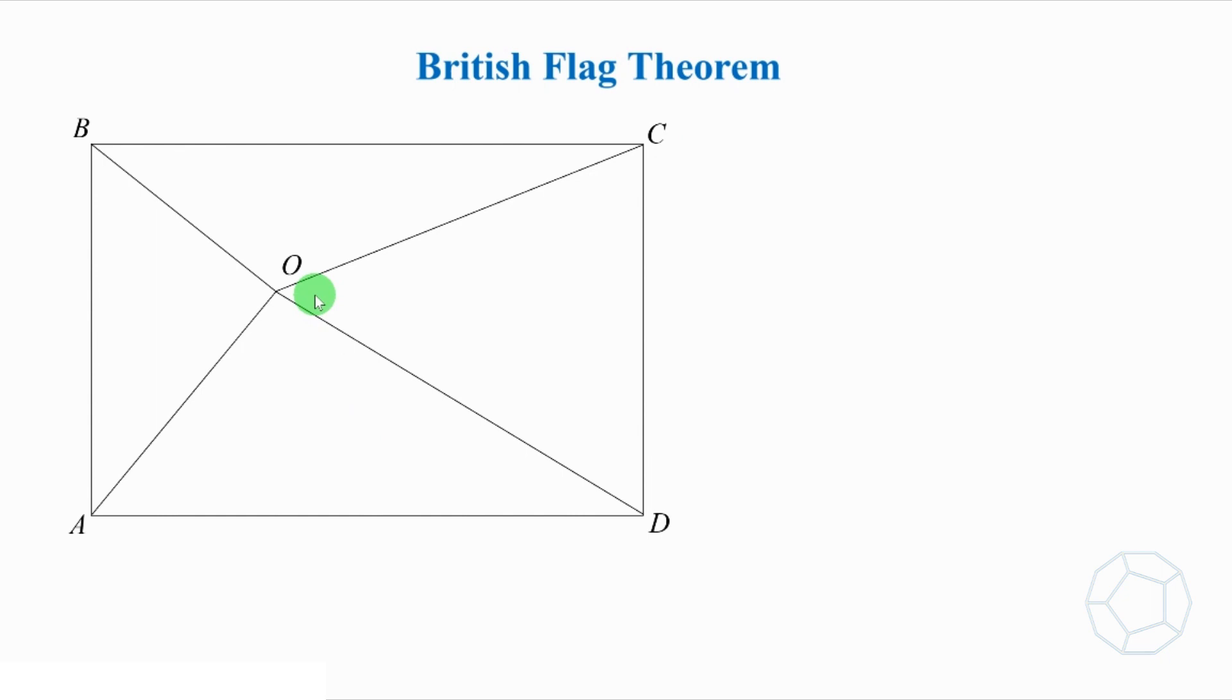O is a point inside a rectangle ABCD. The lengths of OA, OB, OC, and OD are small letters a, b, c, d, respectively.